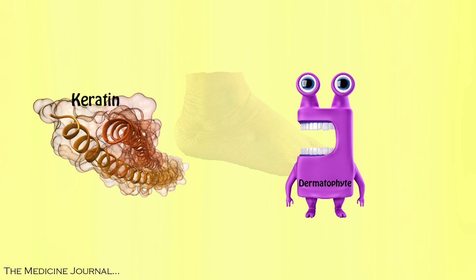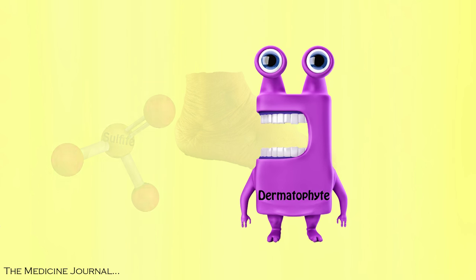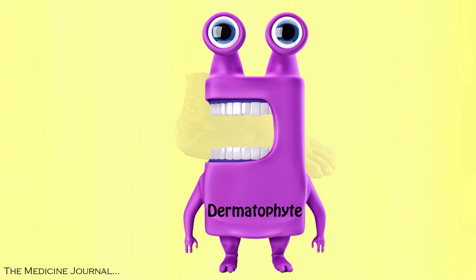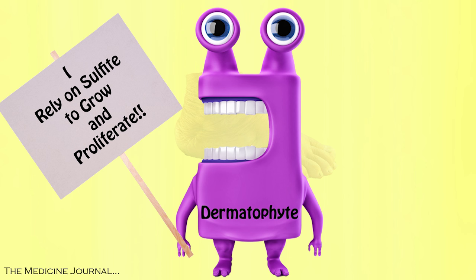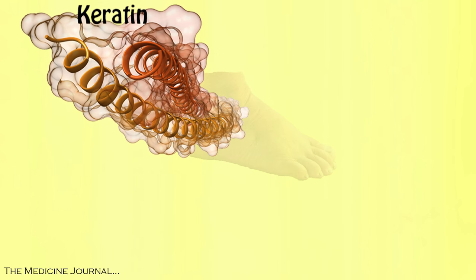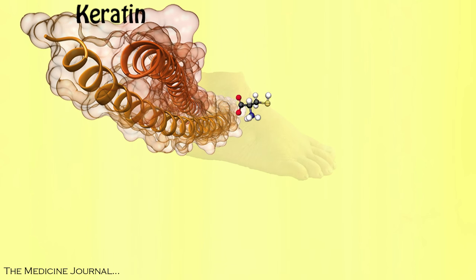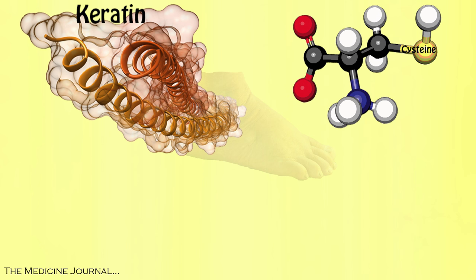Keratin is the main food source for dermatophytes. Once the keratin-rich cells are infected by these fungi, they begin releasing sulfite. Studies have shown that growth and proliferation of dermatophytes is reliant on sulfite. Keratins have a sulfur-containing amino acid known as cysteine. Cysteine bonds are what stabilizes keratin and gives it a rigid structure.